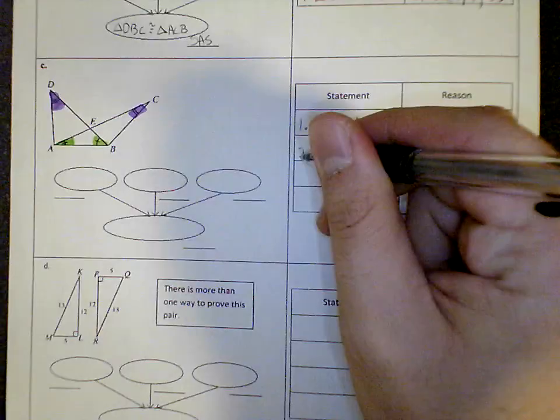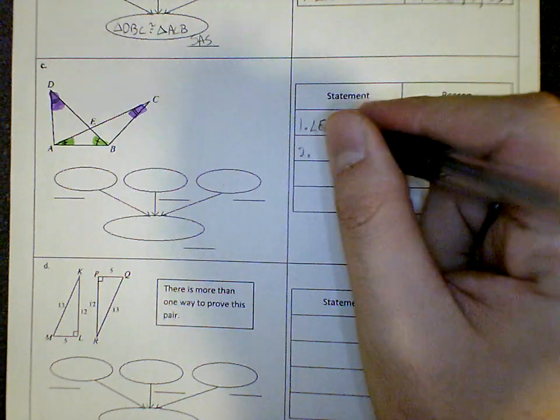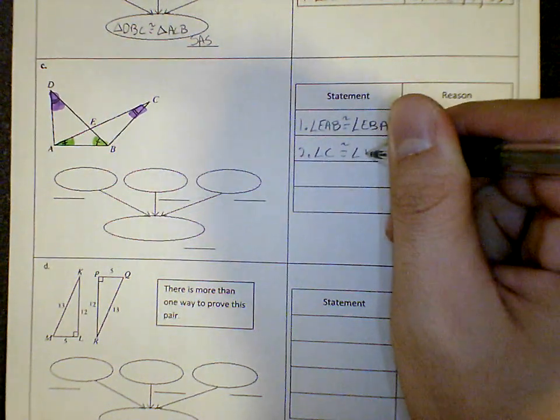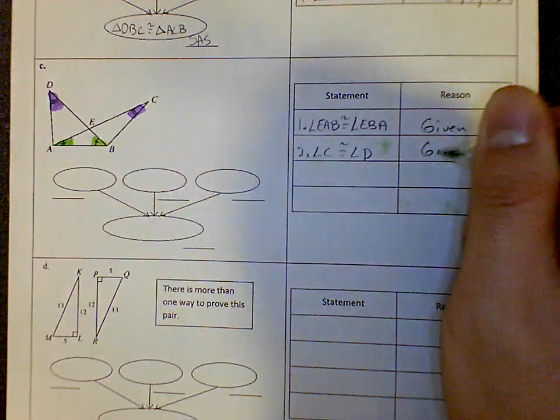We've got this angle is congruent to this angle. So angle C is congruent to angle D. That's going to be given.